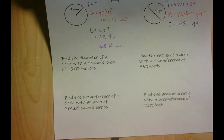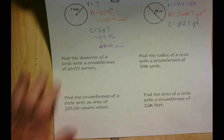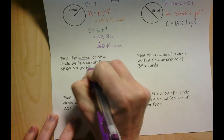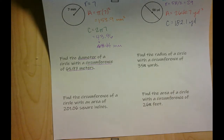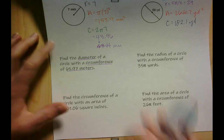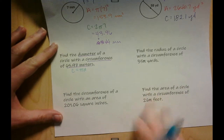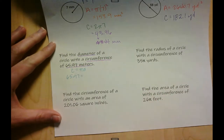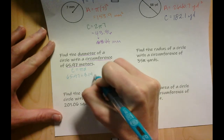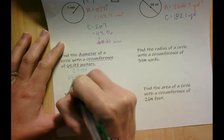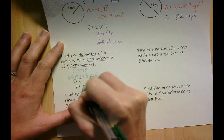Now let's work backwards — these are a bit more challenging. We want to find the diameter of a circle given its circumference. Using the formula circumference equals pi times diameter, we plug in the circumference of 65.97: 65.97 equals 3.14 times diameter. Dividing both sides by 3.14, we get diameter equals 21.